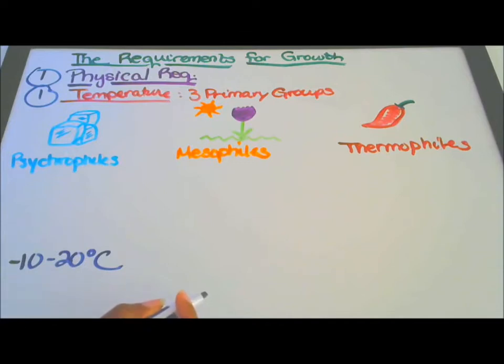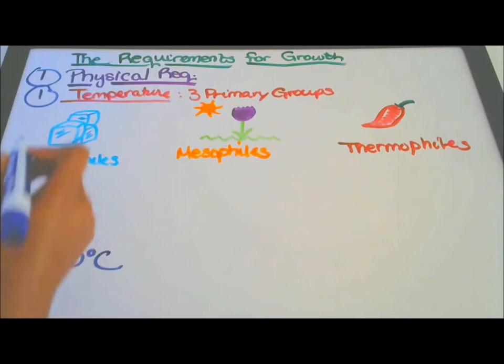Now, how can I remember this particular group of microbes and its temperature? I'm going to take the C in psychrophiles and turn it into cold.